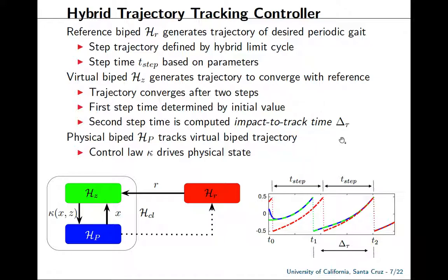Our control system contains three elements. We have a reference biped H_r, which generates a trajectory of the desired periodic gait we want to achieve, emulating a hybrid limit cycle. The red dashed line is this reference system, repeating the same step over and over. The step time t_step is computed based on the parameters. We also have a virtual biped H_z, which generates a trajectory to converge with the reference over the first two steps. This dotted green line is the virtual trajectory, which starts at some initial condition and after the first step is able to converge with the reference. This second step time that allows convergence with the reference is called the impact-to-track time.